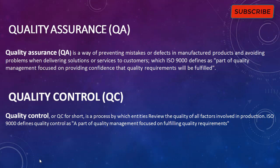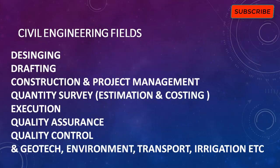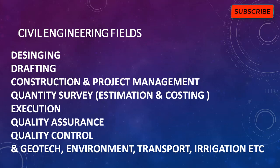Now, which field should a fresh engineer select to start easily? I suggest drafting, quantity survey, or execution. If you want to start as a designing engineer, you should first have a master's degree. After B.Tech, take admission for a master's program, and while doing your masters join any structural engineering firm as a graduate trainee, then continue as a designer. For drafting, most civil engineers don't do it, but if you want to join as a drafter or coordinator you can use Revit Structure or Revit Architecture.